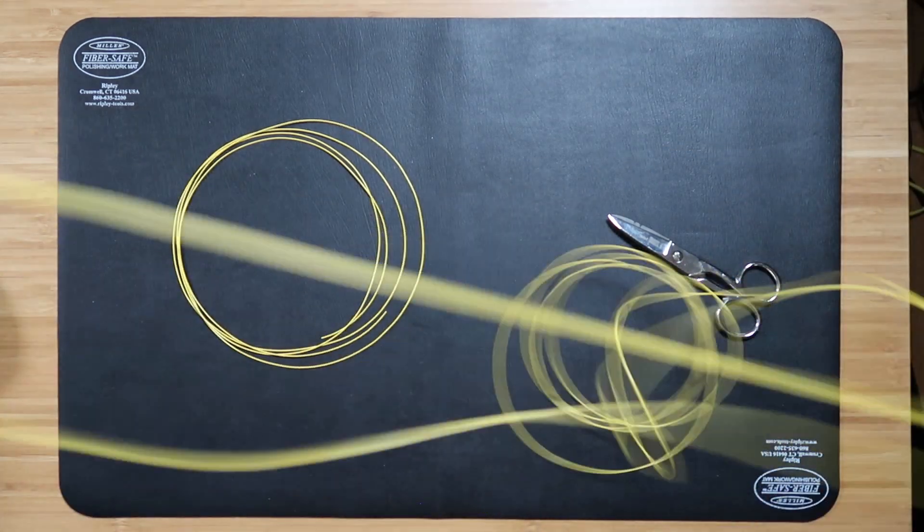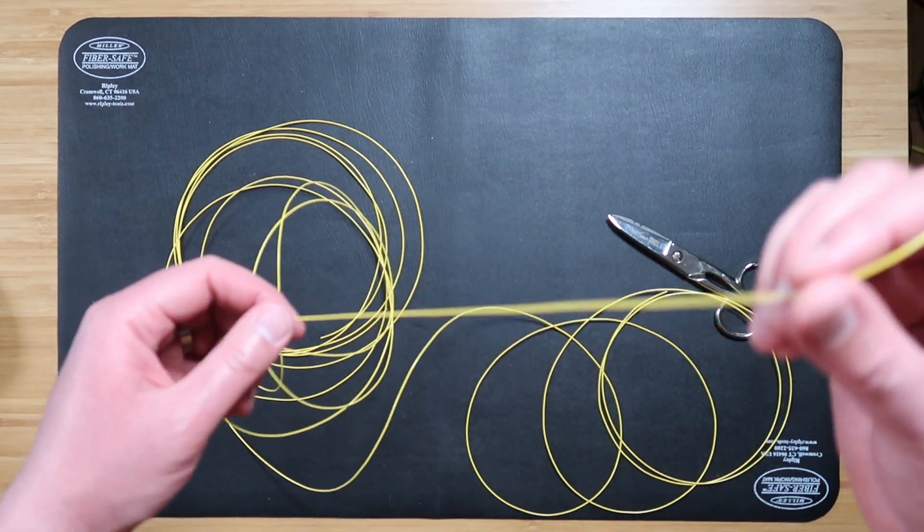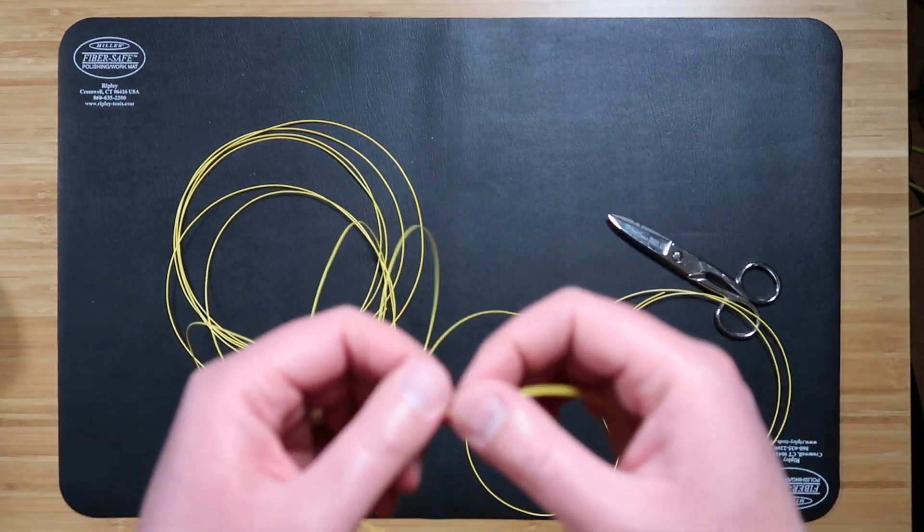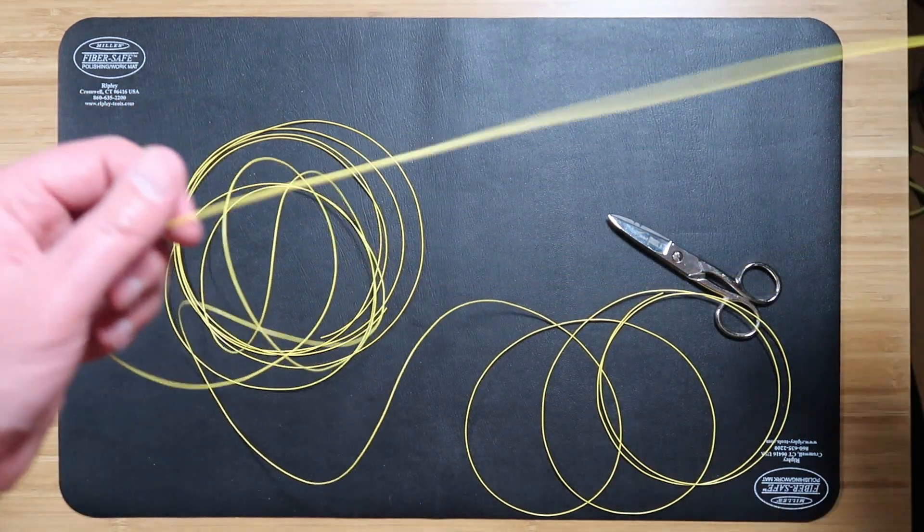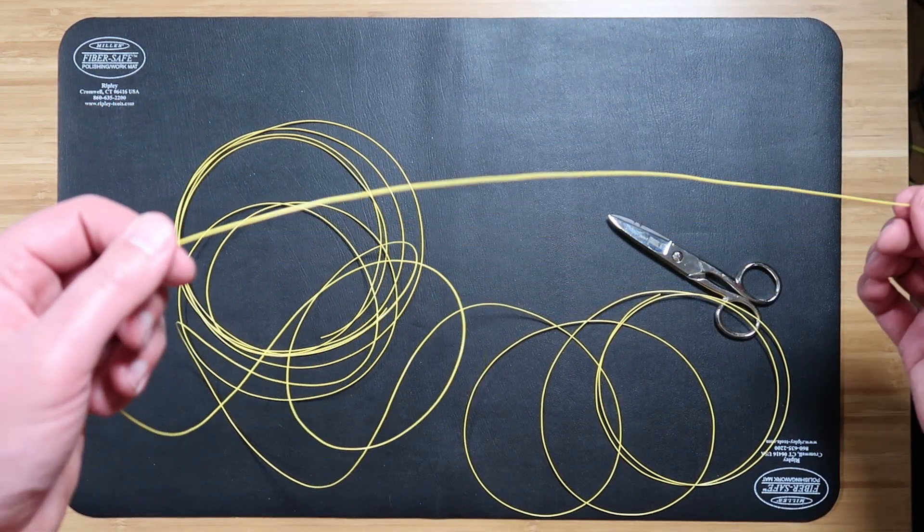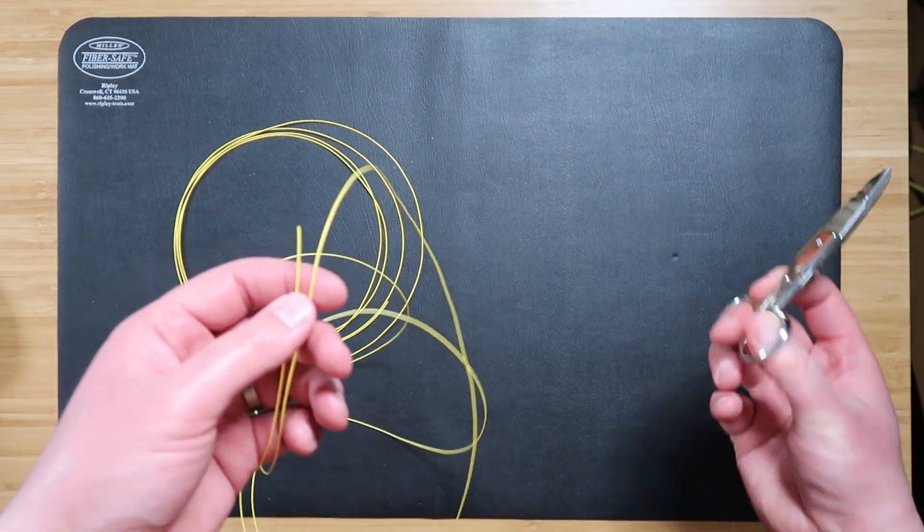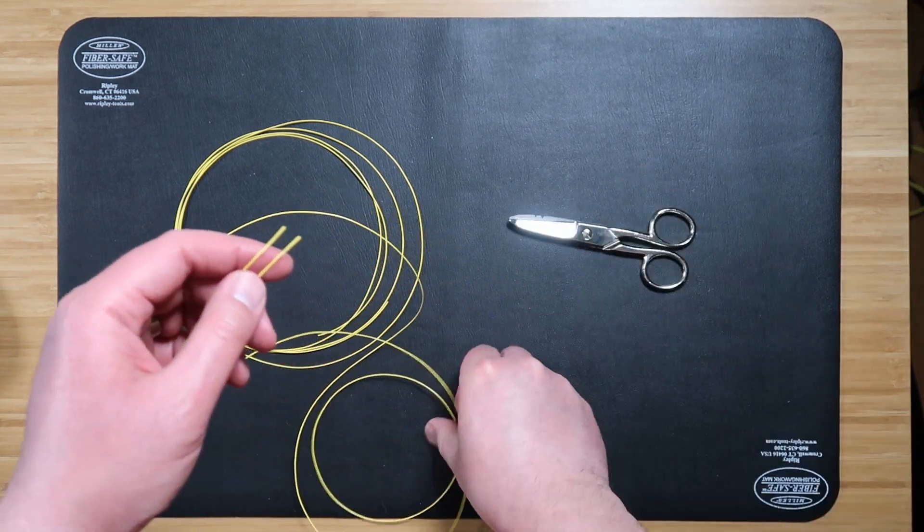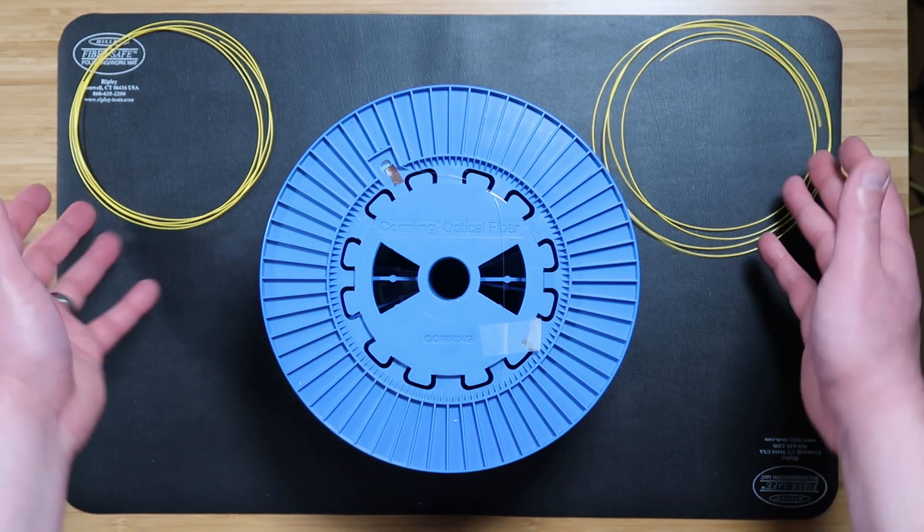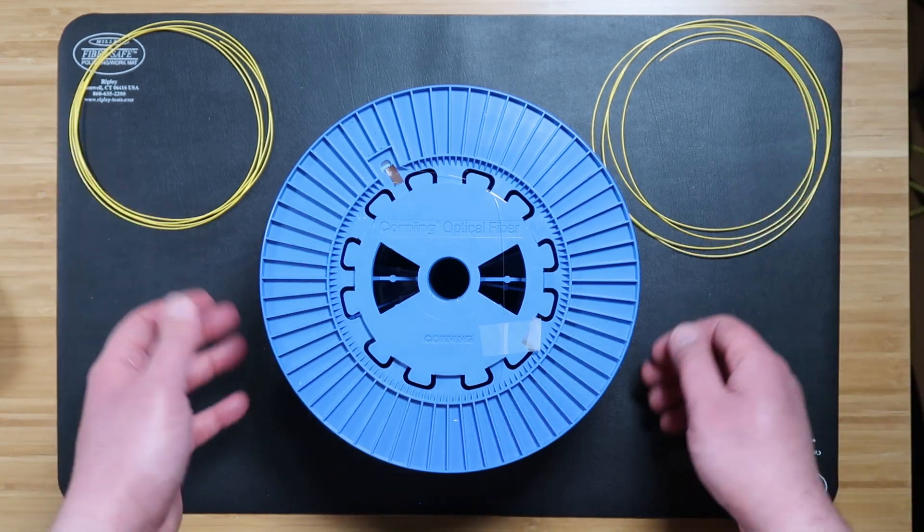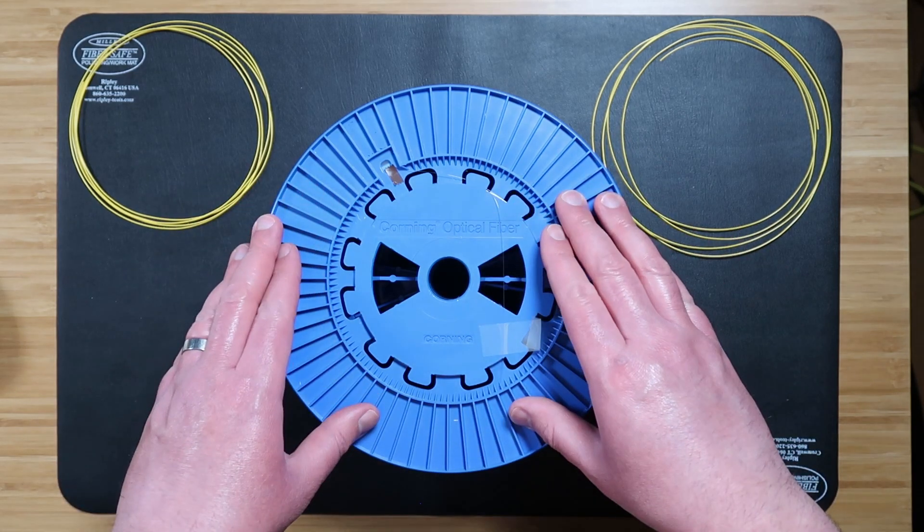Depending on how the furcation tubing is coiled, it can be a little tricky to work with, so make sure you're careful and you don't get any kinks in your tubing. I recommend cutting that portion out if that happens. It doesn't have to be precise. You're going to cut some off probably anyways, but do the best you can. We've got two two-meter furcation tube lengths, which we're going to install on both ends of our fiber spool.